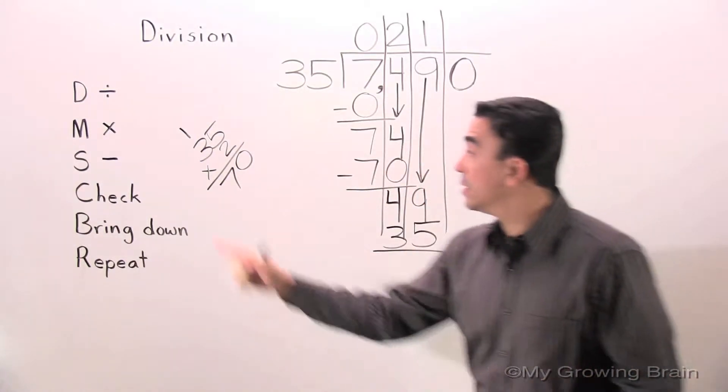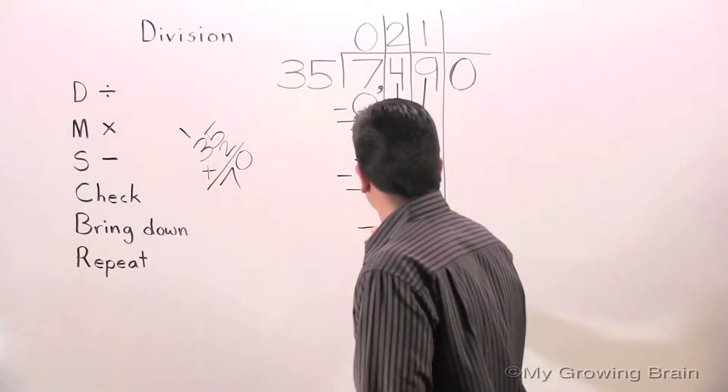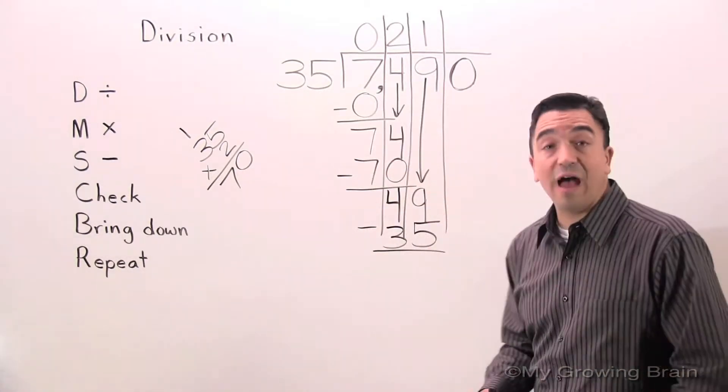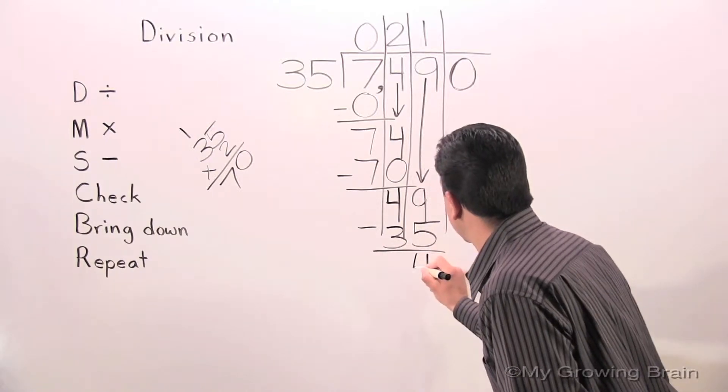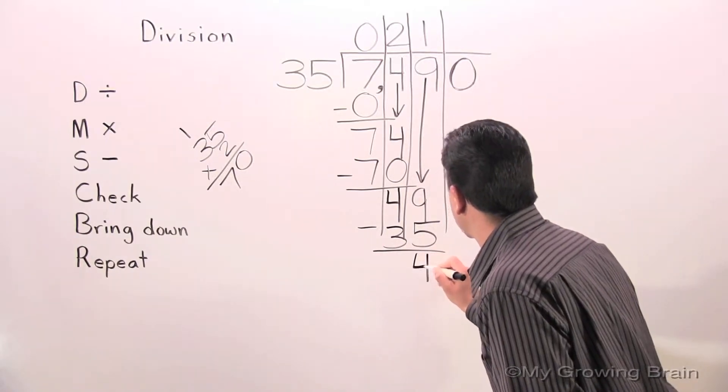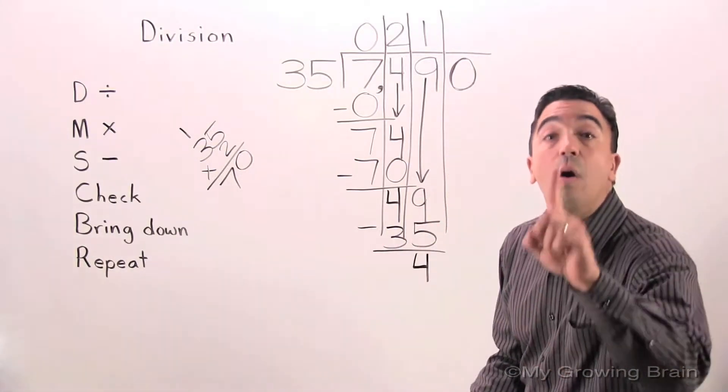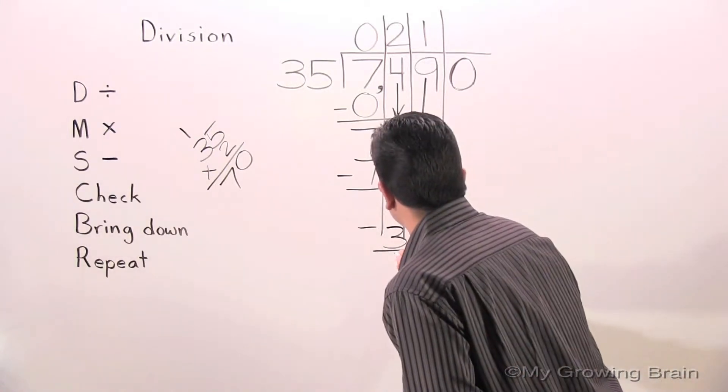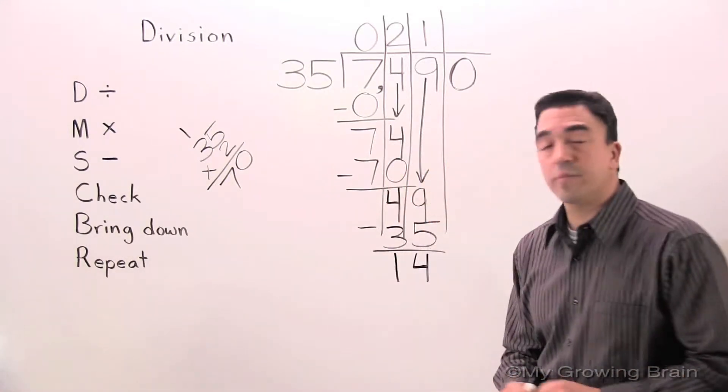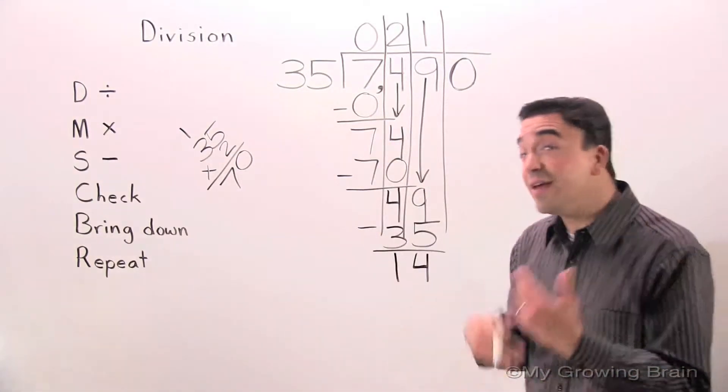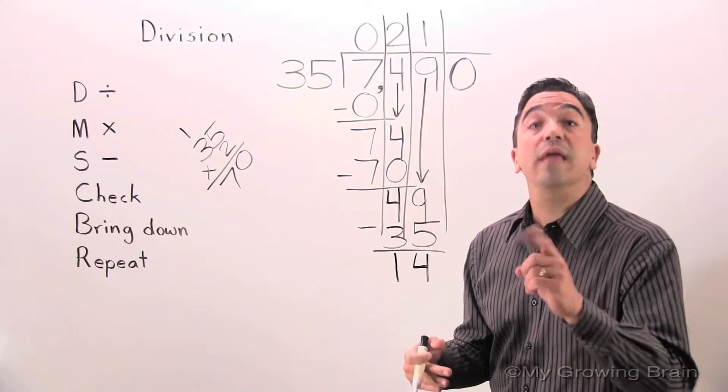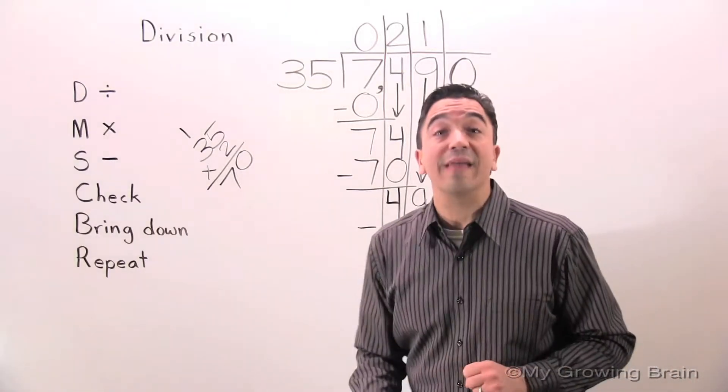Next step. Subtract. 9 minus 5 equals 4. 4 minus 3 equals 1. Next step. Check. 14 is less than 35. Keep on going. Next step. Bring down.